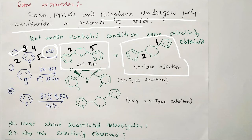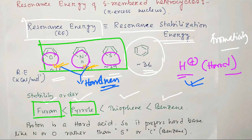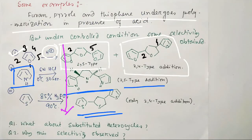In the case of pyrrole, we get only the 2,5-type addition product. For thiophene we get only the 2,4-type product. One trend you can observe: going from furan to pyrrole to thiophene, the strength of acid required increases. This is because thiophene is more stable than pyrrole and pyrrole more stable than furan — exactly the same stability order is reflected in the conditions required.